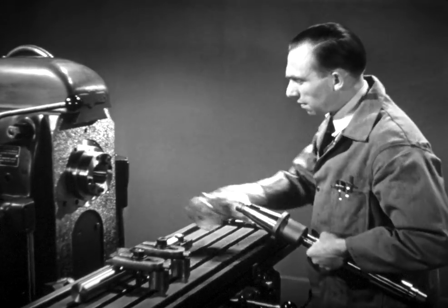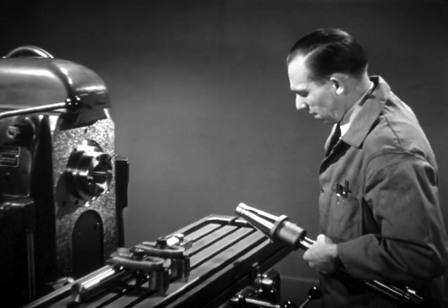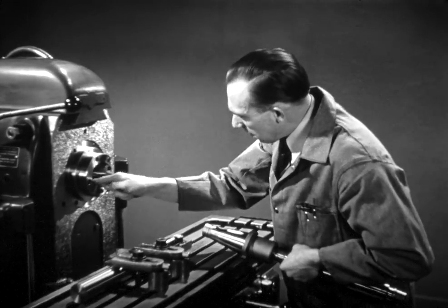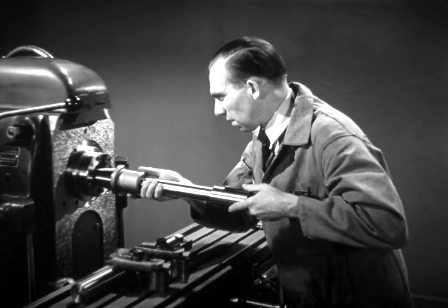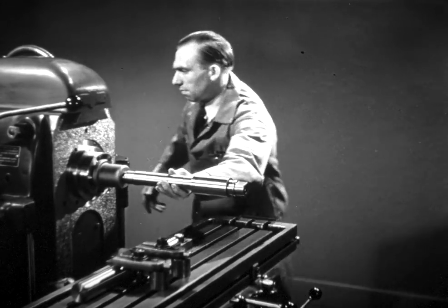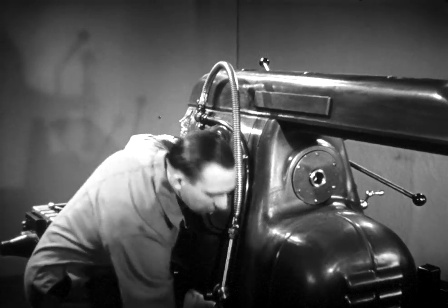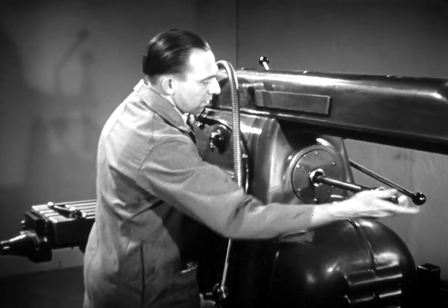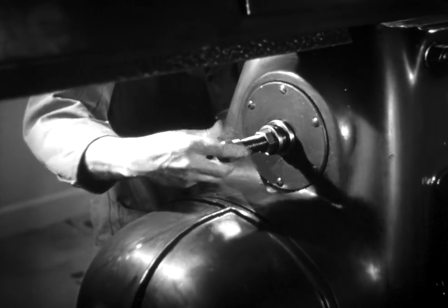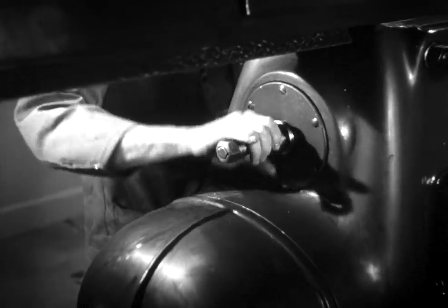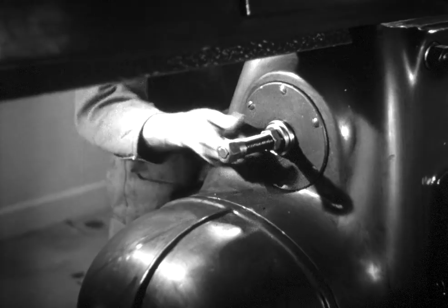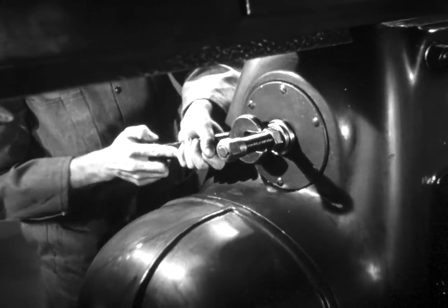The tapered surfaces of both arbor and spindle must be free from grease, dirt, and burrs so that they will line up perfectly and ensure accurate work. Insert the arbor into the spindle and push it solidly into place. Pull the arbor into position with a draw-in bar inserted into the spindle from the rear of the machine. Screw in the bar by hand as far as possible, then tighten the sleeve nut with a wrench to set the arbor solidly in place.